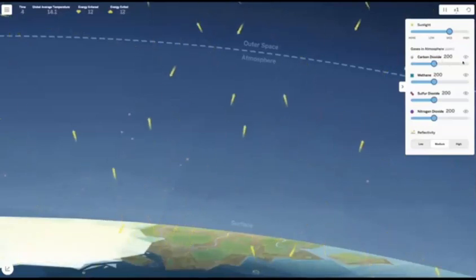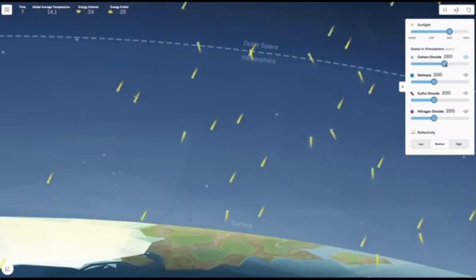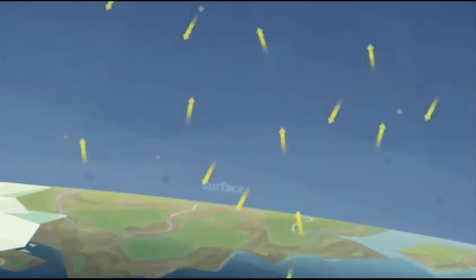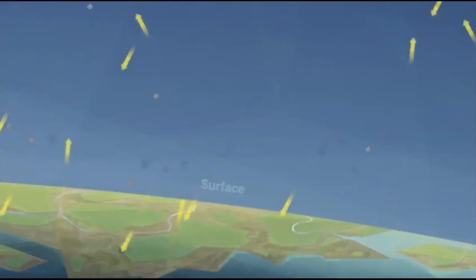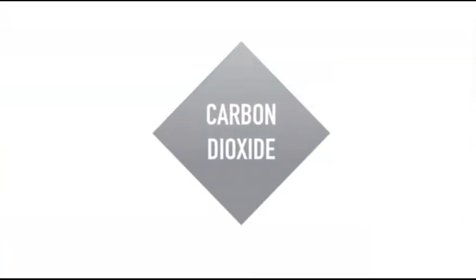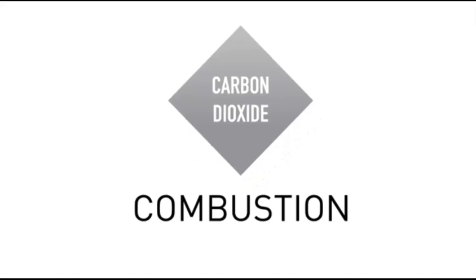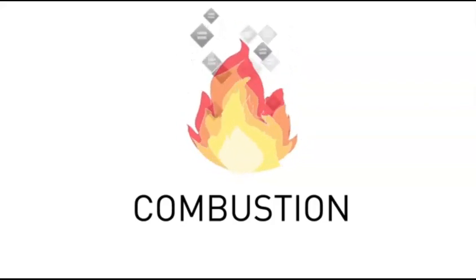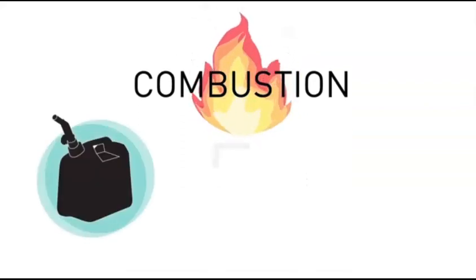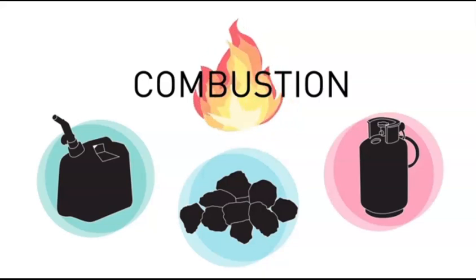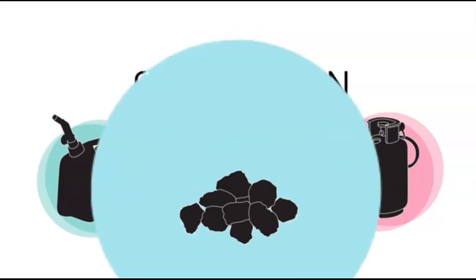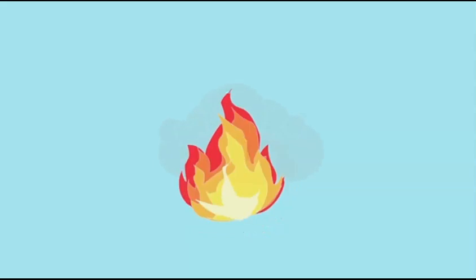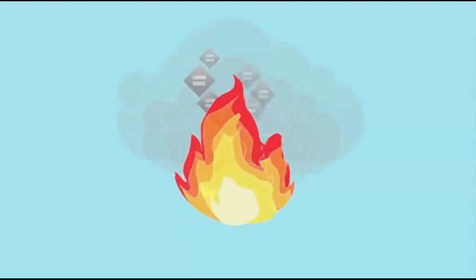We know that carbon dioxide gas in the atmosphere is causing climate change because it redirects energy back to Earth's surface, making it warmer. But where exactly is all this carbon dioxide coming from? One of the main ways carbon dioxide is added to the atmosphere is through a process called combustion. Combustion means burning. One important way combustion happens is when people burn fossil fuels like gasoline, coal, or natural gas for energy. When these fuels get burned, they do not go away — they change into something else. Through combustion, some of the matter from the fuel becomes carbon dioxide and is released into the atmosphere.